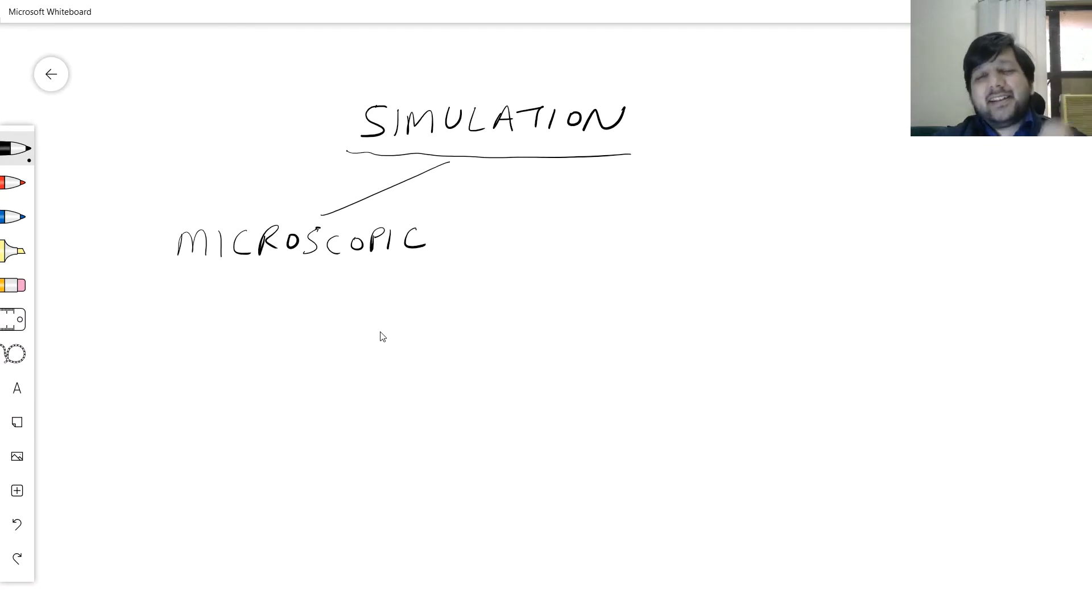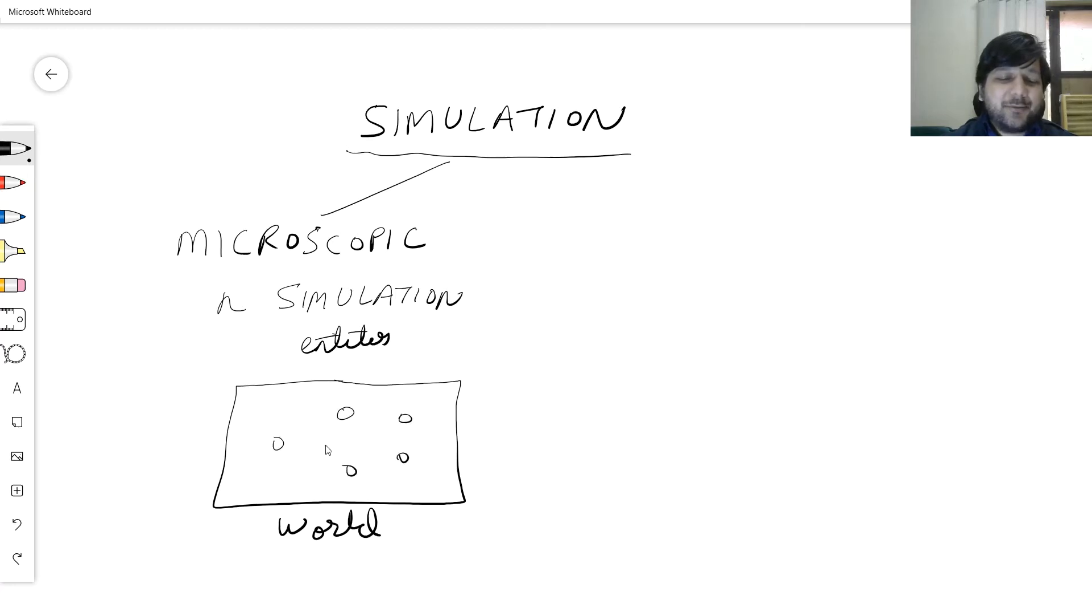Now say I have got n simulation entities and this is my world, my simulation world. You put all these simulation entities around over here, and you let them behave exactly as they want. This guy loves these two people, this guy hates this person, and so on and so forth. If you really need to simulate it up, you will say: for all entities, for i equals 1 to n.